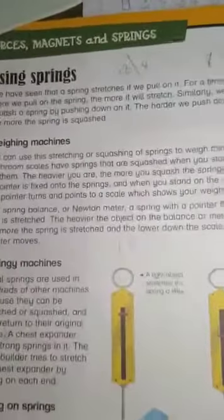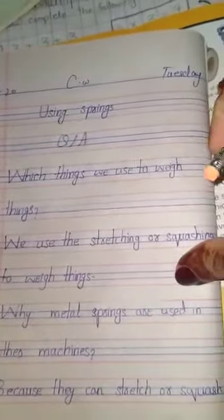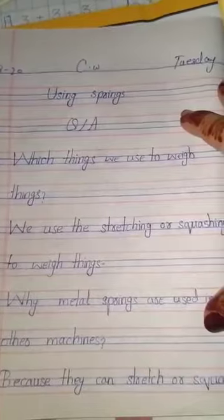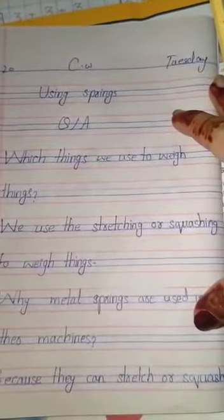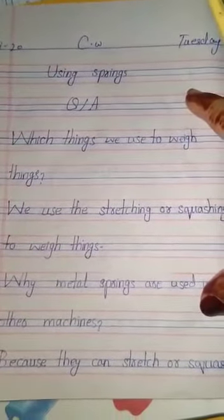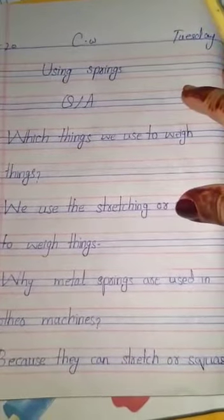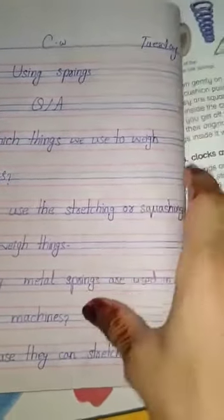After reading the lesson, which thing do we use to weigh? We use the stretching and squashing of springs to weigh things. Why are metal springs used in other machines? Because they can be stretched and squashed and return to their original shape.